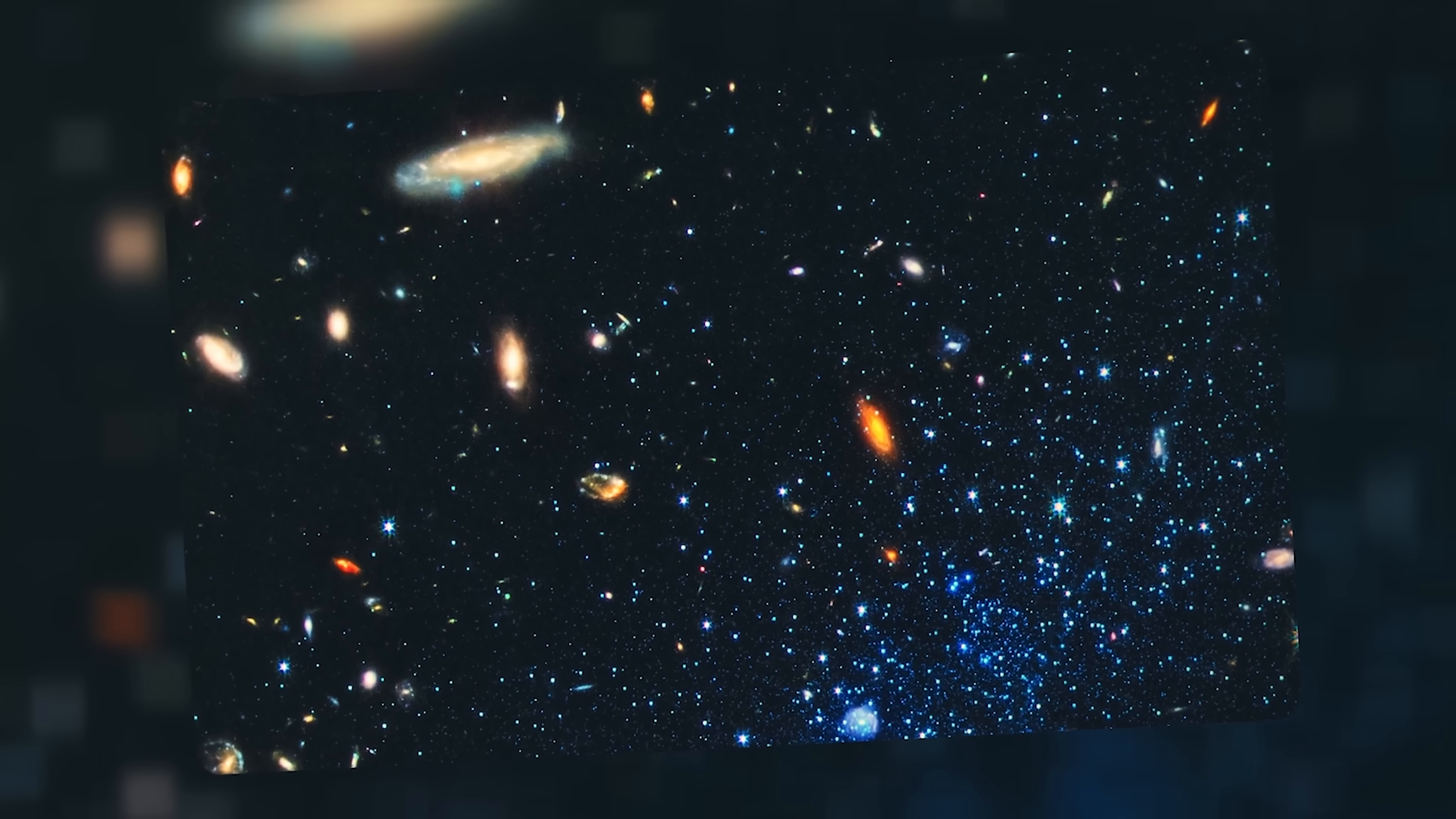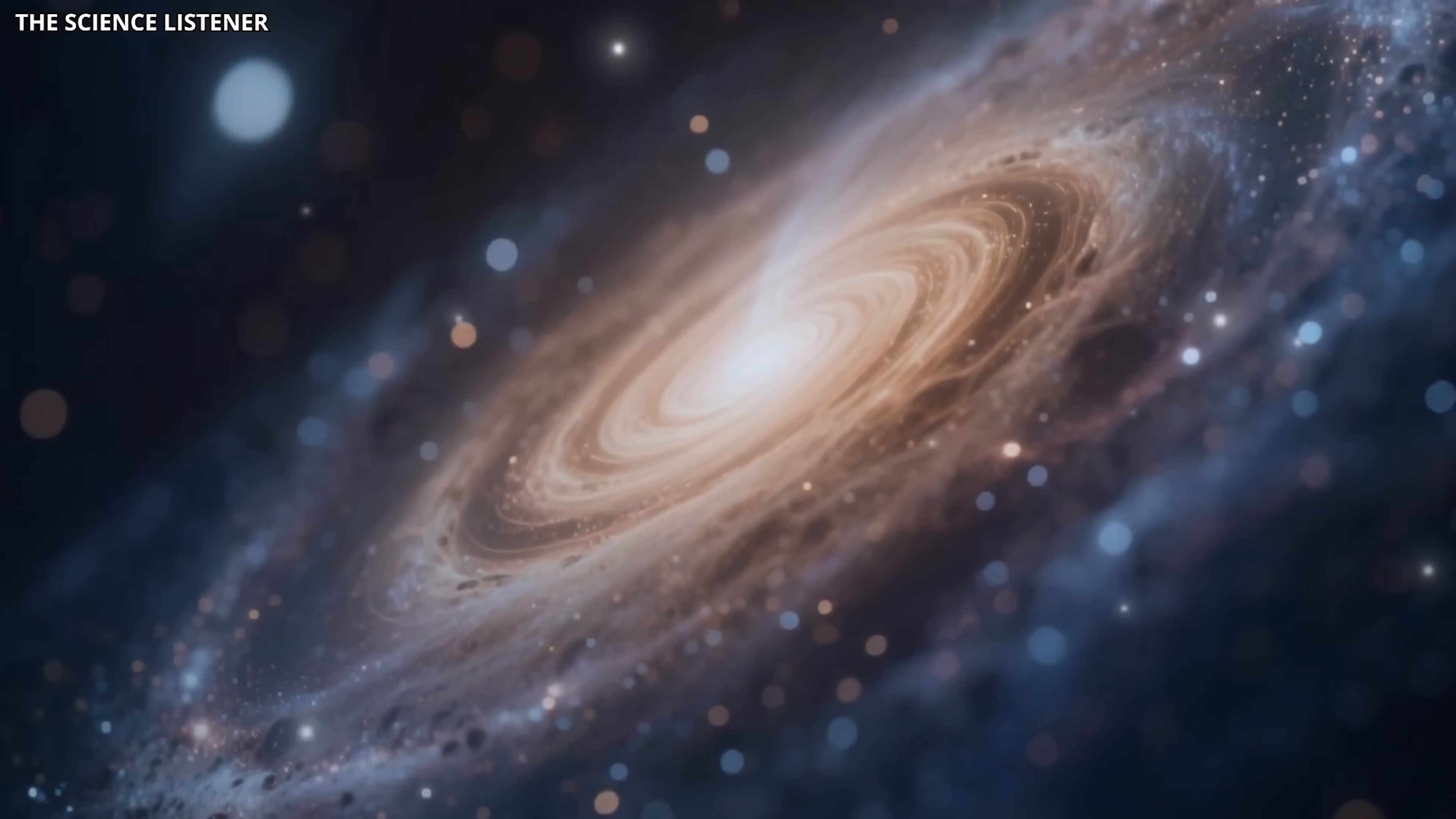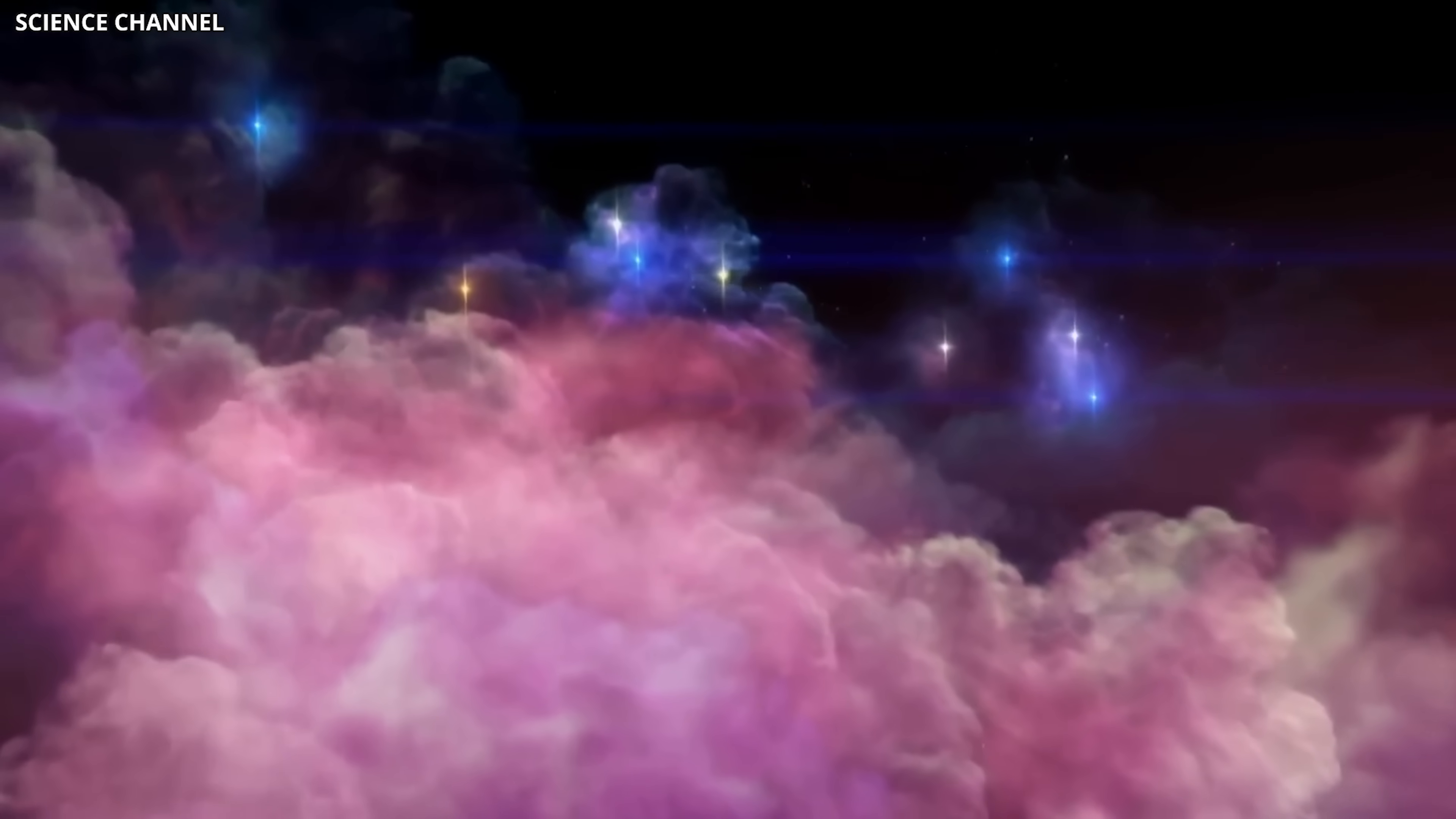This is particularly unusual because, as per the Big Bang theory, the universe should have developed in a chaotic fashion, with galaxies spinning in random orientations. Nevertheless, this surprising consistency implies that the universe may have originated with an initial rotation, which is not considered in current theories.